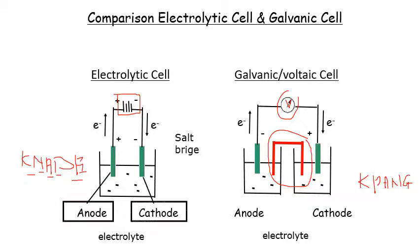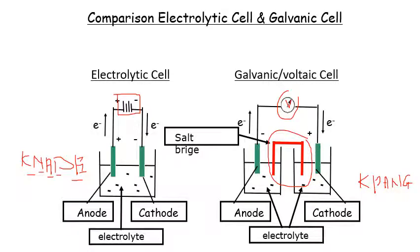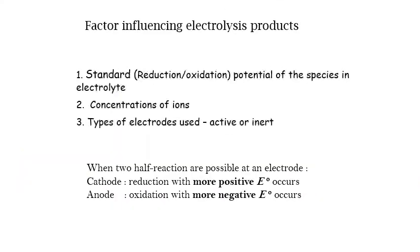For the cell notation, anode and cathode are written in the solid phase, and the electrolyte must be written in the aqueous phase with concentration included. There are three factors that influence the electrolysis product: first, standard reduction potential — at the cathode, we choose the more positive value and at the anode, the more negative value; second, concentration; and third, whether we use an active or inert electrode.